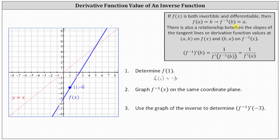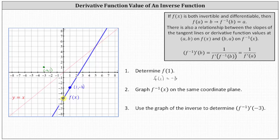We can use this to graph f inverse of x. Going back to the graph of f of x, because the graph contains the point one comma negative three, the point negative three comma one would be a point on the graph of f inverse of x. Let's go ahead and plot that point in green. Now let's find two more points. Notice the y-intercept is the point zero comma negative five, which indicates the graph of f inverse of x must contain the point negative five comma zero, which is here.